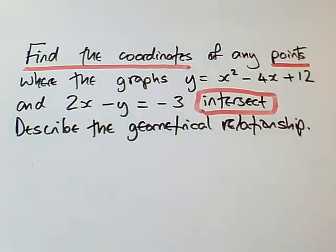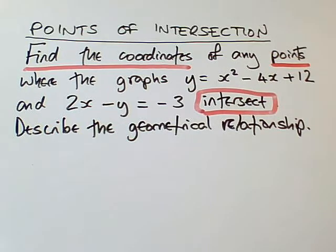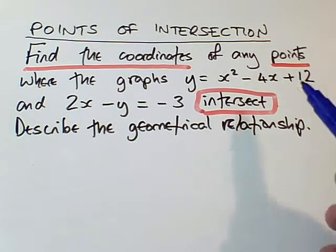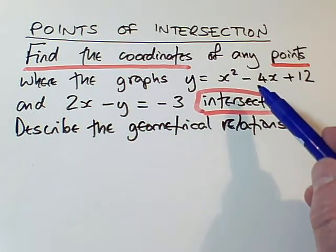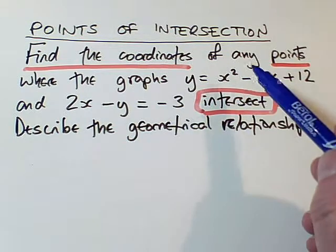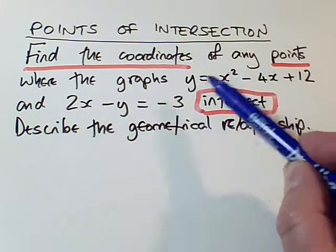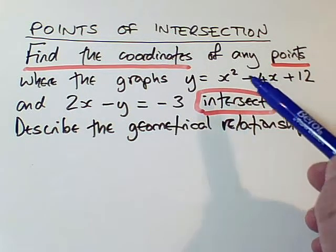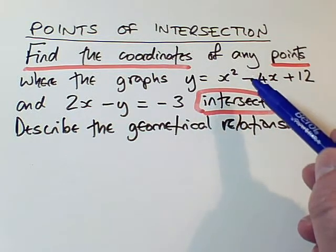This word here, intersect, is the trigger that shows I'm doing a particular method. So this video is about finding points of intersection. I need to start with two graphs, and the points of intersection are the x and y values that make both equations true at once. So we call this situation simultaneous equations.